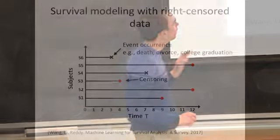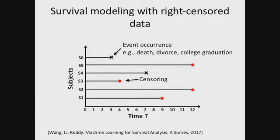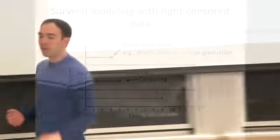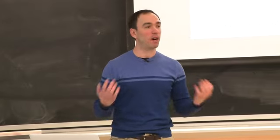To briefly remind you where we were on Thursday: we talked about how one could formalize risk stratification not as a classification problem over some predefined time period, but rather as a regression task — predicting time to event given what you know about a patient at time zero. For example, the event might be death, divorce, or college graduation. Patient one had the event at time step nine; patient two at time step twelve; and patient four was censored after time step seven, so we don't know when the event occurred.